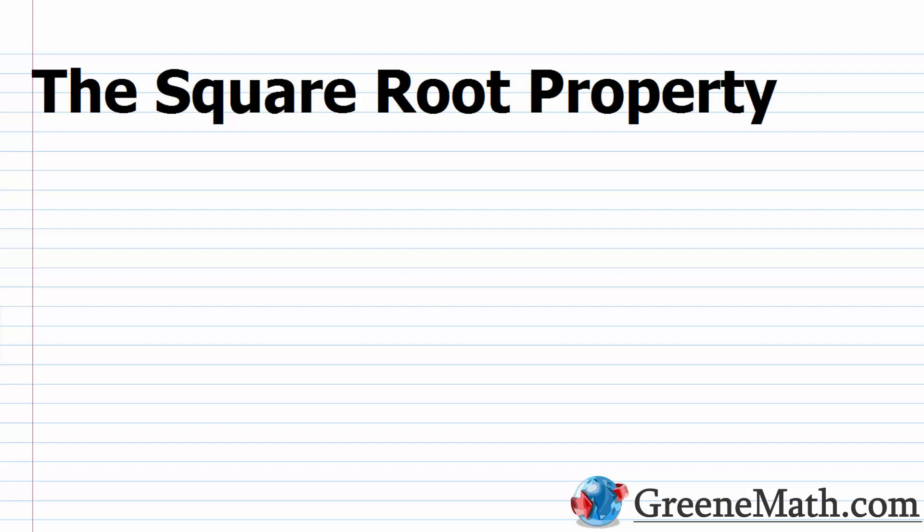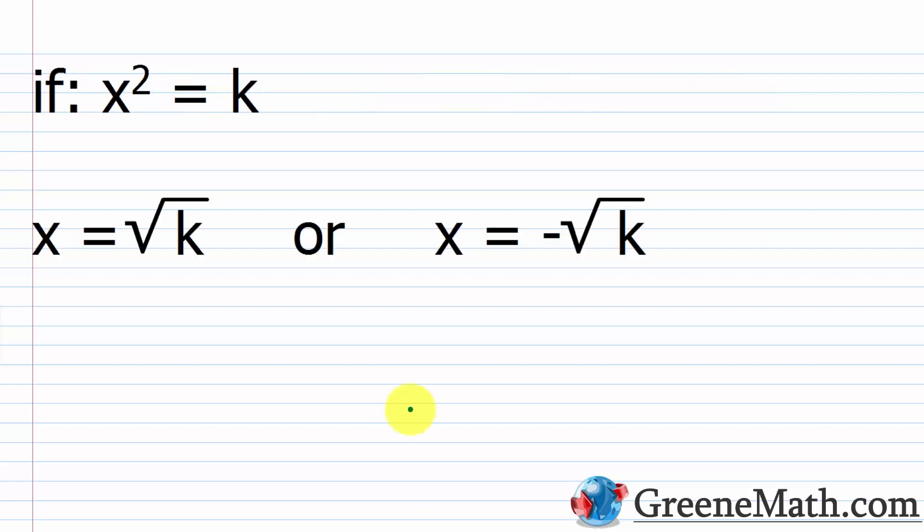In this lesson, we want to review the square root property. In our last lesson, we reviewed how to solve a quadratic equation using factoring. Although factoring is the simplest method we can use to solve a quadratic equation, it's not going to work in every scenario. So we need other tools that will work for every quadratic equation. In this lesson, we're going to lay the groundwork for our methods known as completing the square and also the quadratic formula.